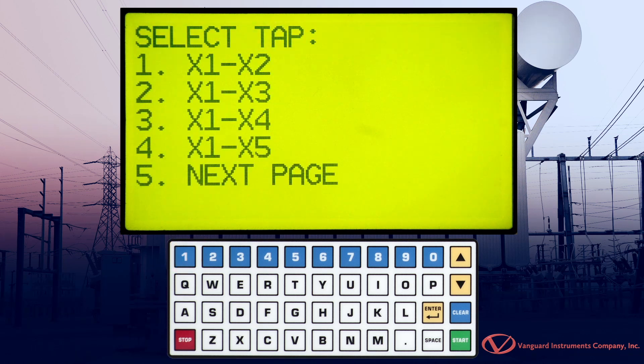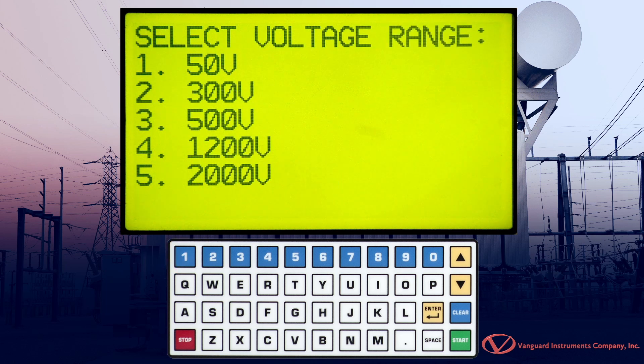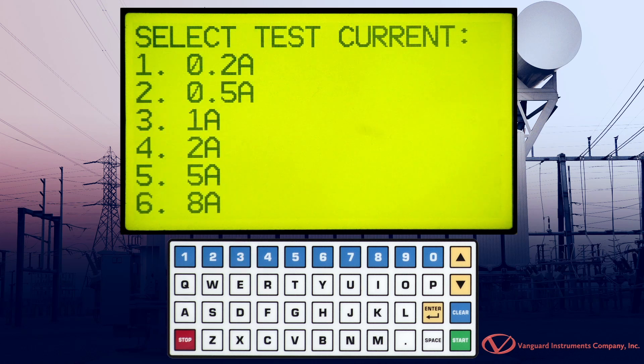Next, select the tap connection by pressing the corresponding key. For this example, we are using tap X1 to X2, so we'll press the 1 key. From this screen, we'll select the test voltage. Press the 3 key for 500 volts.